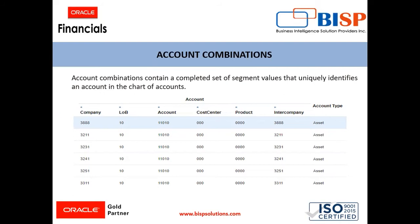So you can see in this screen, there is an example where a combination is created by selecting company, line of business, account, call center, product, and intercompany as the segments. You can see this is the same account which is created, but as the company segment is different, there is a different combination each time we create it.